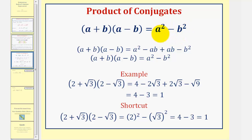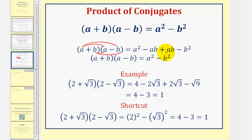I'm not a real big fan of the shortcut. Notice how if we multiply these two binomials like we normally would, we have four products, which gives us A squared minus AB plus AB minus B squared. Notice how the two middle terms are opposites and therefore their sum is zero, so this simplifies nicely to A squared minus B squared. As long as we know how to multiply two binomials, we don't have to memorize this formula or use the shortcut.